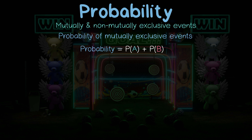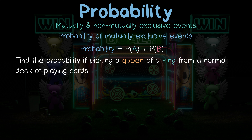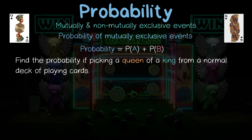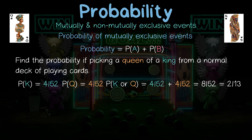Very straightforward for mutually exclusive events, and it doesn't get much more complicated for non-mutually exclusive events. But let's do one more example before we move on to those. What are the chances of pulling a queen or a king out of a normal deck of playing cards? The probability of removing a king from the deck is going to be 4 out of 52, because there are 52 total cards and 4 of them are kings. The probability of pulling out a queen is going to be the same. If we add these two together, we get 8 over 52, which simplifies to 2 over 13, and as a decimal is approximately 0.15.